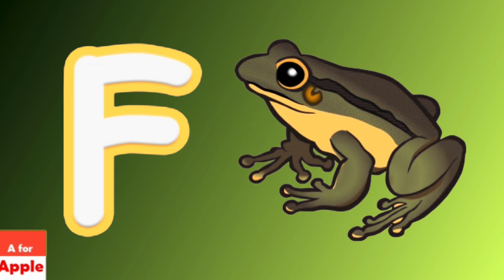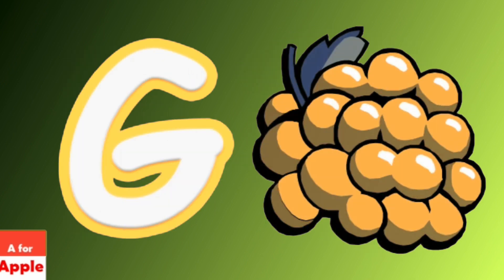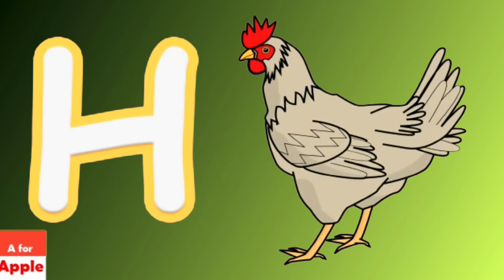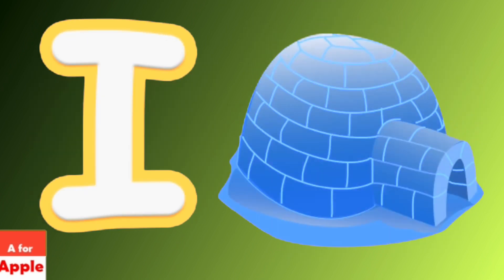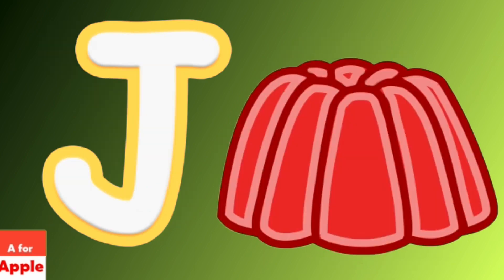F for frog, frog. G for grapes, grapes. H for hen, hen. I for igloo, igloo. J for jelly, jelly.